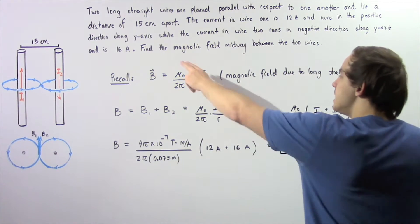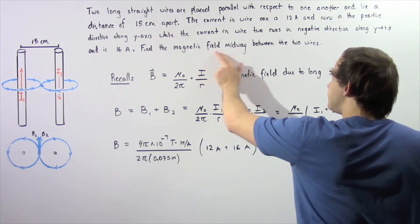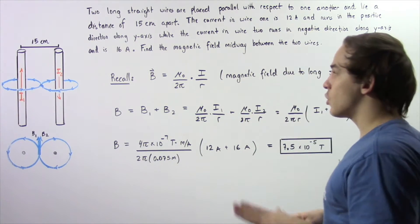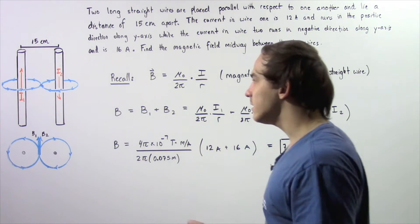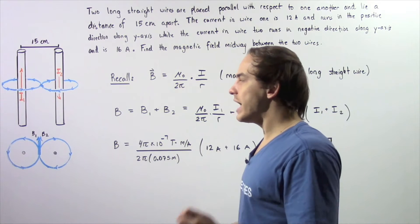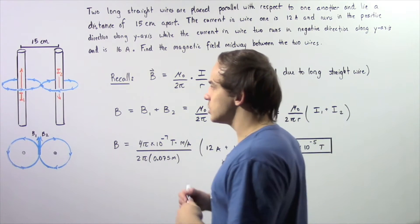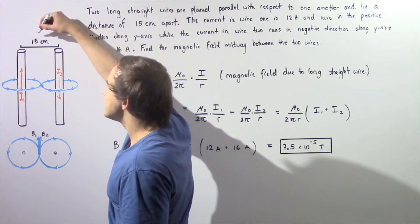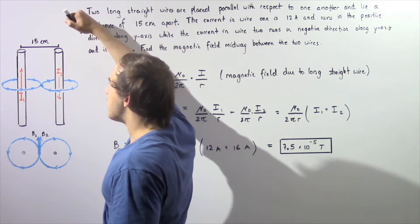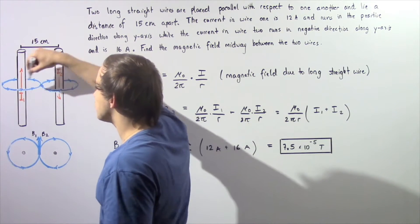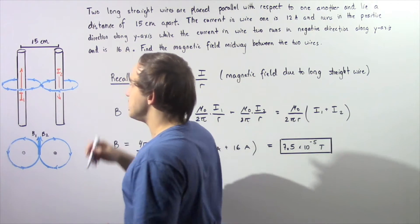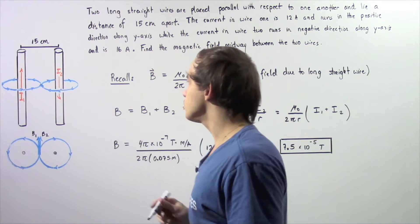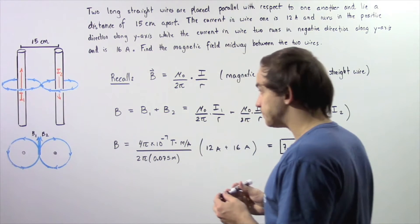We want to find the magnetic field midway between our two wires — specifically, we want to calculate the magnitude and direction of the magnetic field at a point 7.5 centimeters from either one of these wires, that is midway between the two wires.